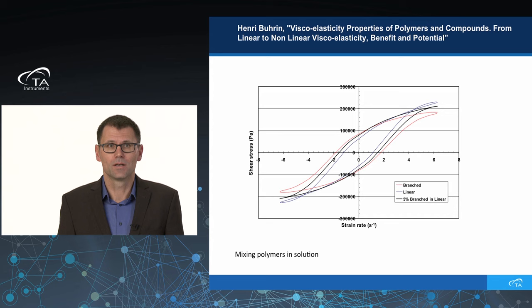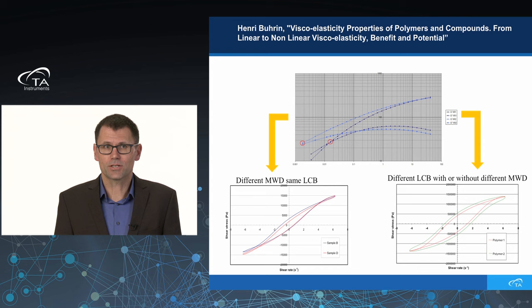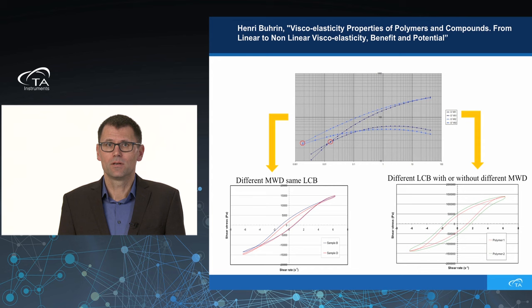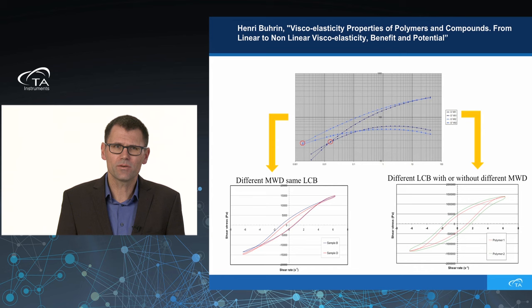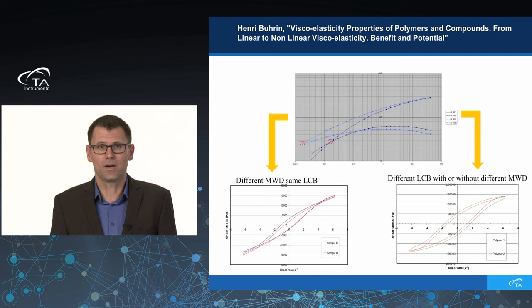To properly characterize a polymer for extrusion, doing only a Mooney viscosity is not sufficient. What we have to do is make a frequency sweep to calculate molecular weight and molecular weight distribution, and also make a LAOS test — a high strain test — which gives information about long-chain branching of the polymer, which is very important for both processing behavior and production of the polymer and compound.